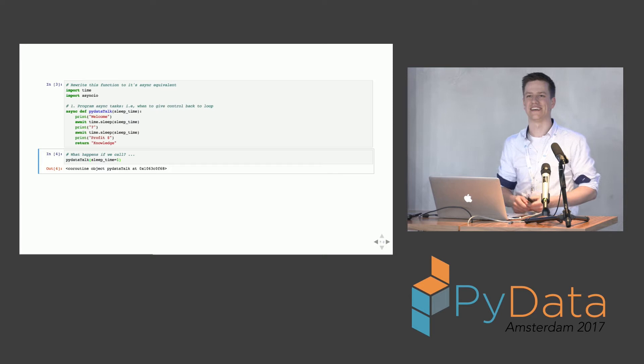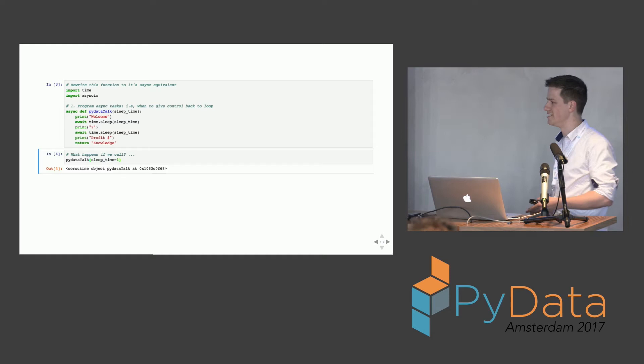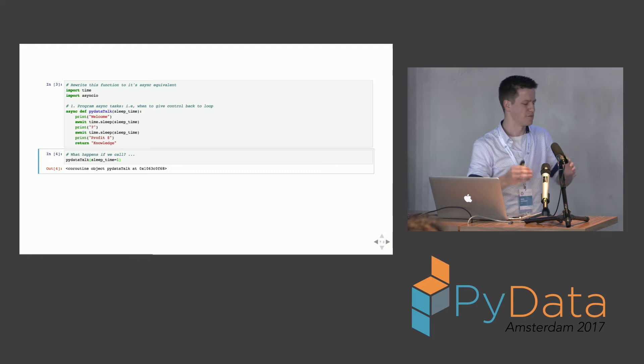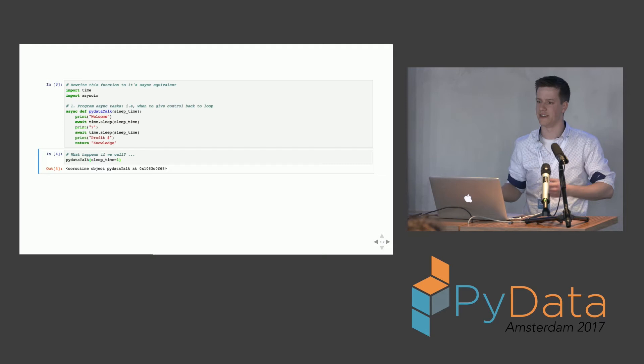Maybe you thought it would print 'welcome', 'question mark', 'profit', and return knowledge — but it doesn't. It actually gives you a coroutine object. That's because we put the async keyword there, which makes it a function you give to a loop object rather than calling directly. The loop can then actually run this object. We still have to create a loop object and assign the tasks to it.